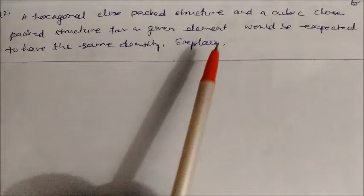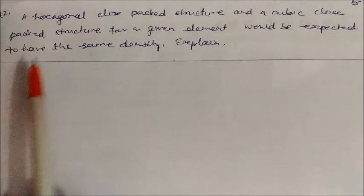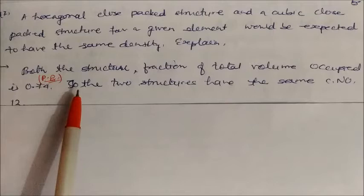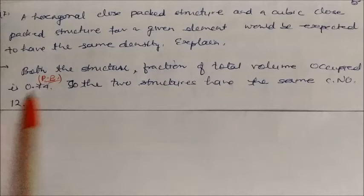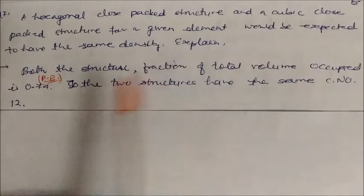A hexagonal close-packed (HCP) structure and a cubic close-packed (CCP) structure for a given element would be expected to have the same density. Explain. Because in both structures, the fraction of total volume occupied is 74% — the packing efficiency is 0.74 in both HCP and CCP. Also, both structures have the same coordination number. That's why they are expected to have the same density.